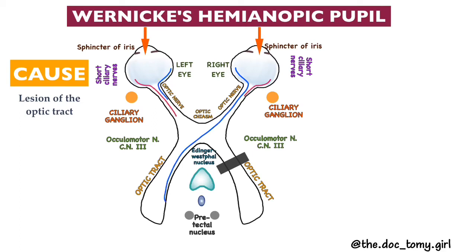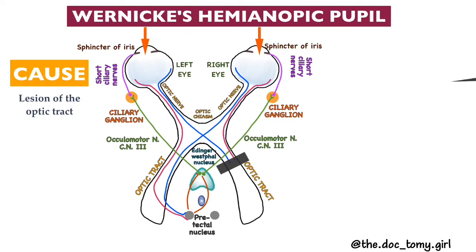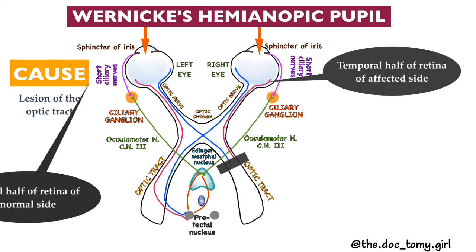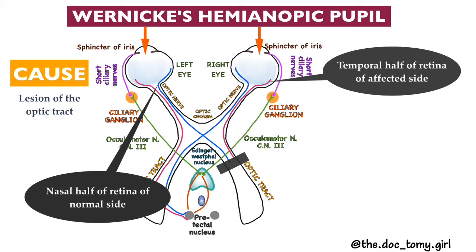The next abnormality is Wernicke's hemianopic pupil, caused by a lesion of the optic tract. In the given figure, you can see the lesion of the optic tract on the right side. Diagnosis is very difficult because a very narrow streak of light must fall selectively on the temporal half or the nasal half of the retina. The right optic tract receives fibers from the temporal half of the retina of the affected side and from the nasal half of the retina of the normal side. When light is given selectively to these halves, there is an absence of both the ipsilateral direct light reflex and the contralateral consensual light reflex.